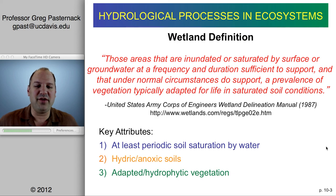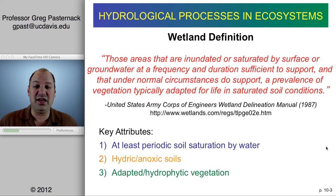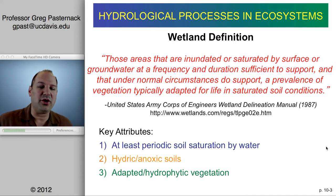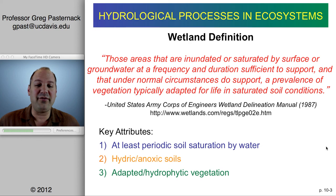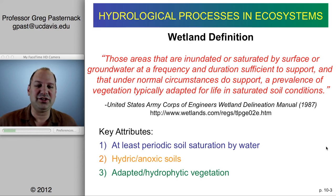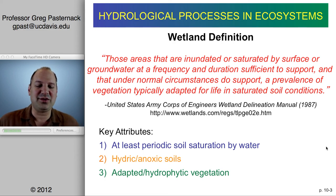The United States Army Corps of Engineers Wetland Delineation Manual from 1987 provides this definition: wetlands are those areas that are inundated or saturated by surface or groundwater at a frequency and duration sufficient to support, and that under normal circumstances do support, a prevalence of vegetation typically adapted for life in saturated soil conditions. There are three key attributes that are all required to have a wetland present.